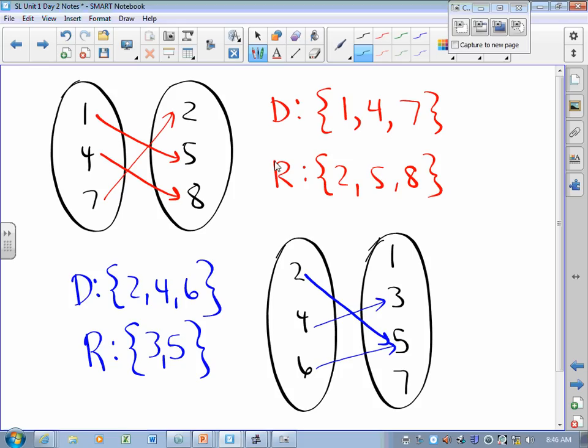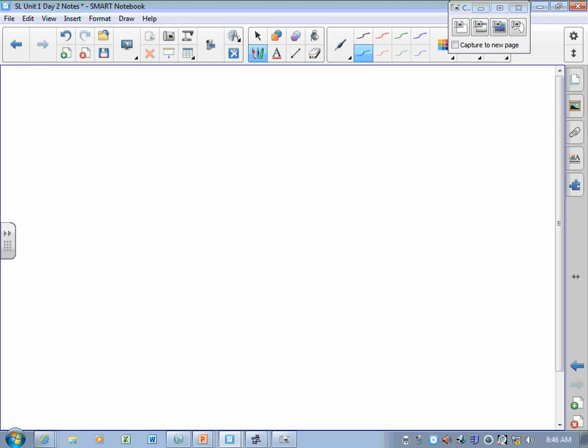Domain and range is easy in a discrete case. It gets trickier in the graphical case. Consider the function y = x². Very straightforward function.